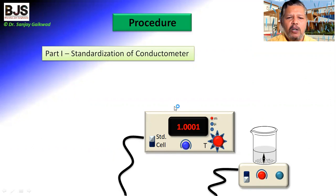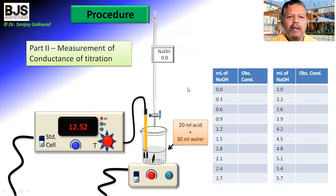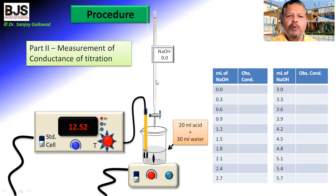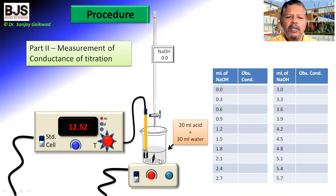This completes the first part of the experiment. In the second part, we perform measurement of conductance for the titration. For this titration, we take the burette and fill it with 0.5 normal NaOH solution. In the beaker, we take 20 ml of the given acid plus 30 ml of water and stir with the help of a magnetic needle and magnetic stirrer. Then the knob is changed from standardization to cell, so the conductivity cell is now active.